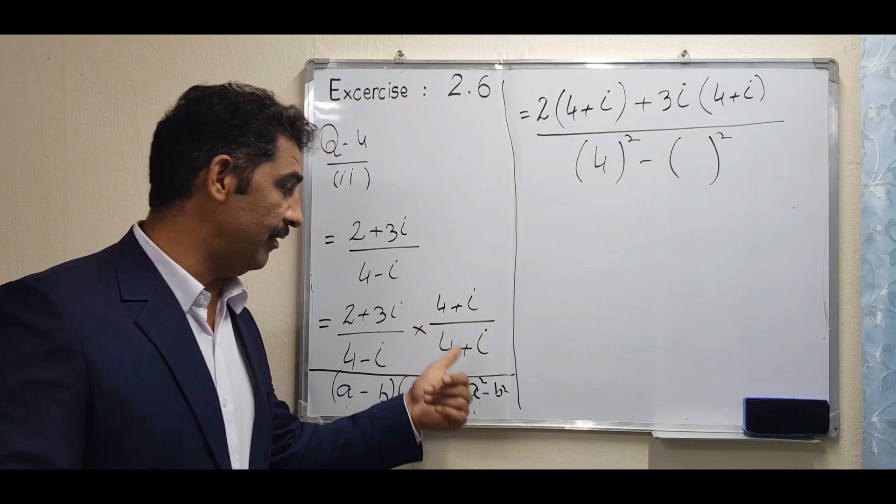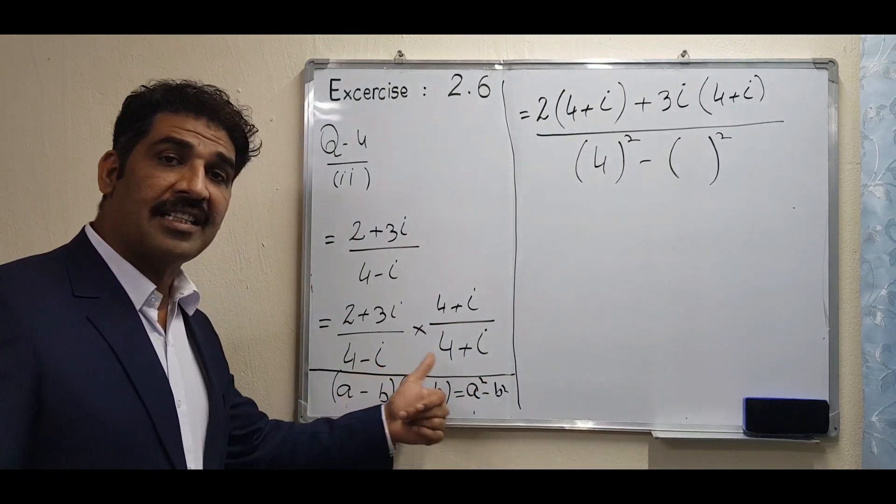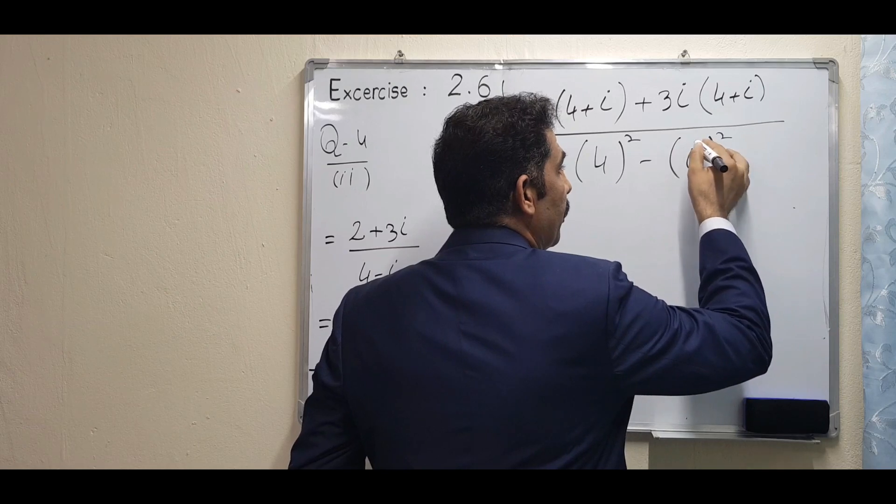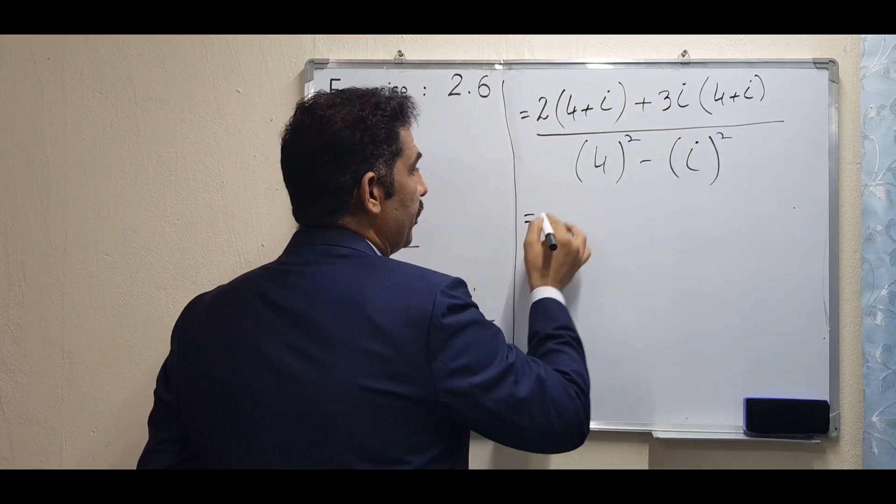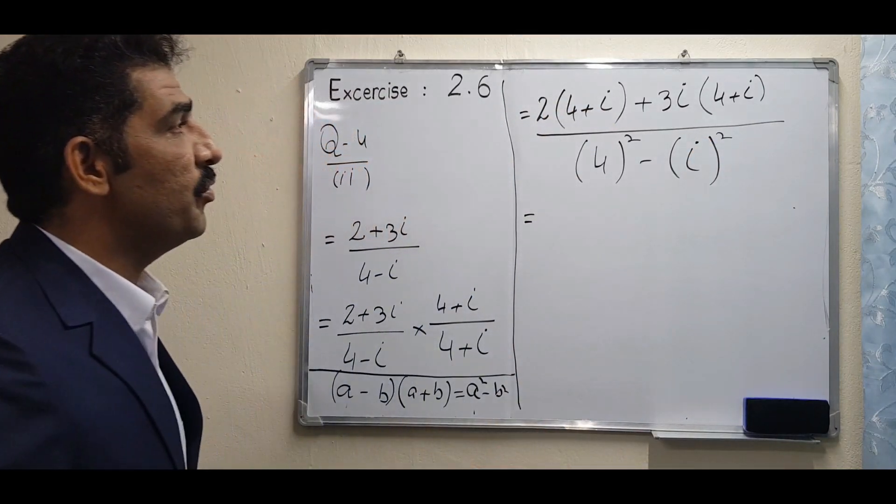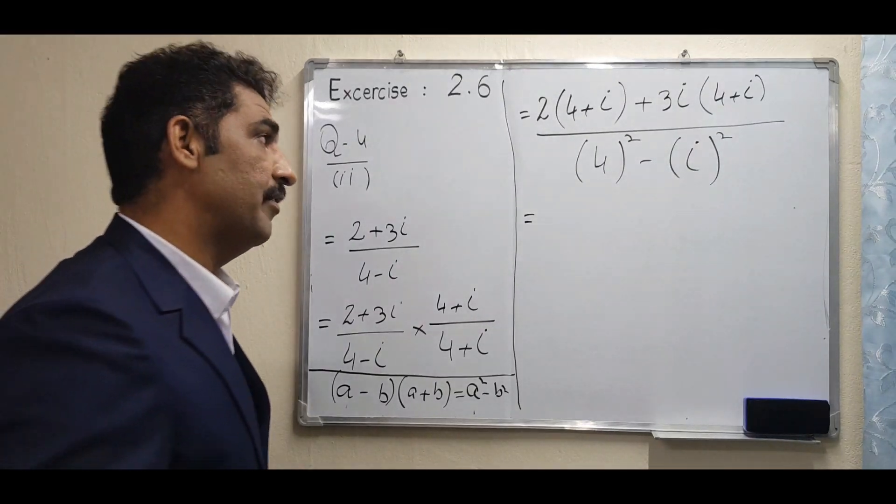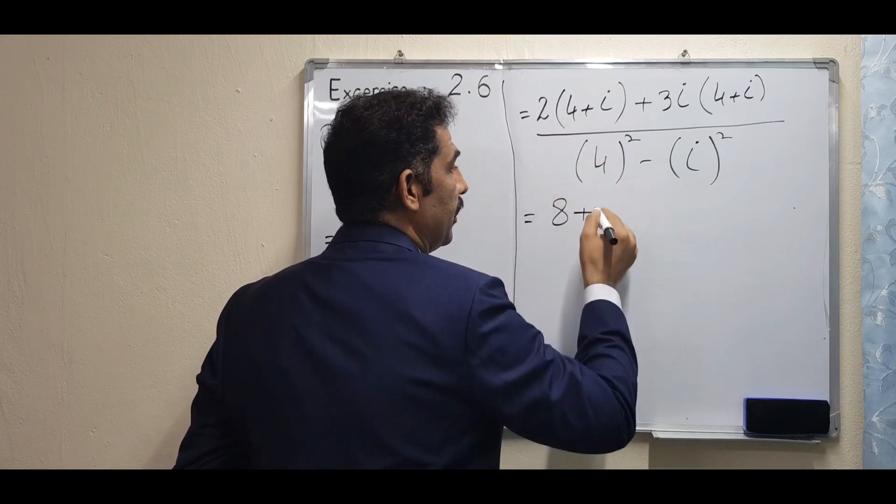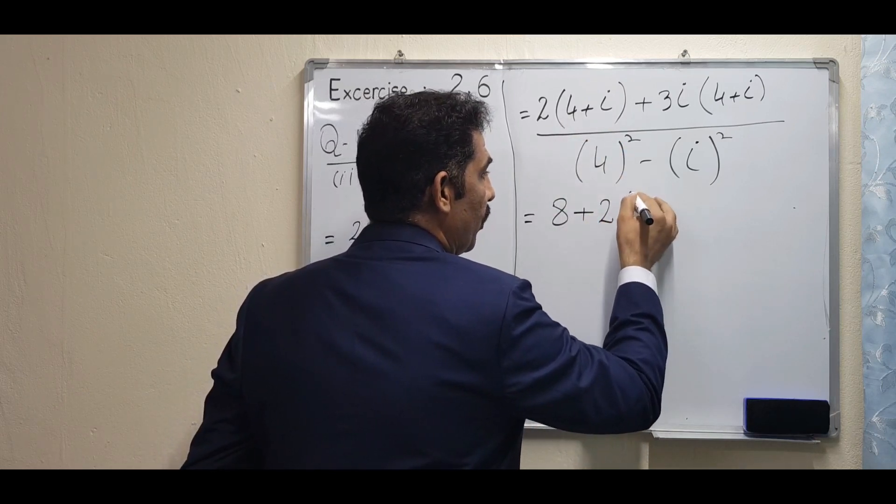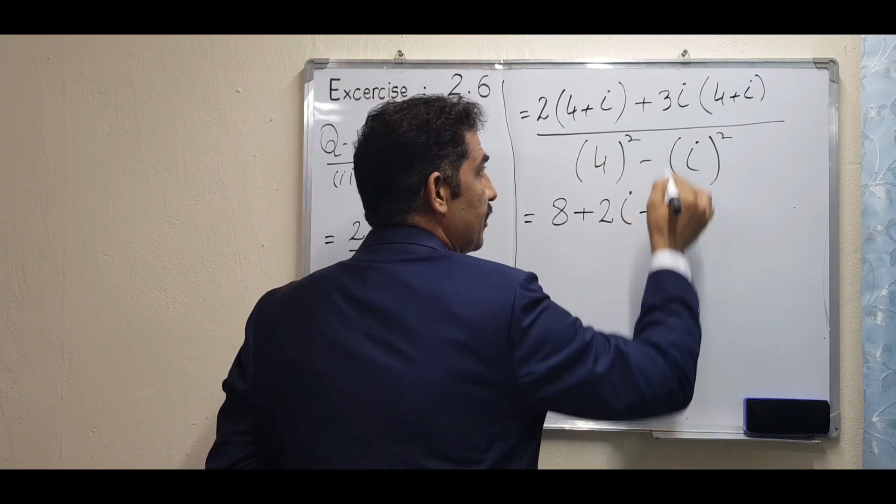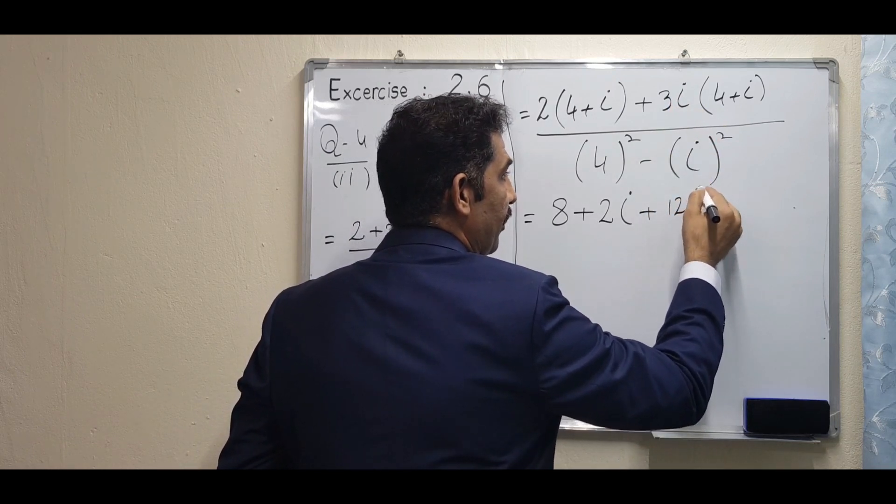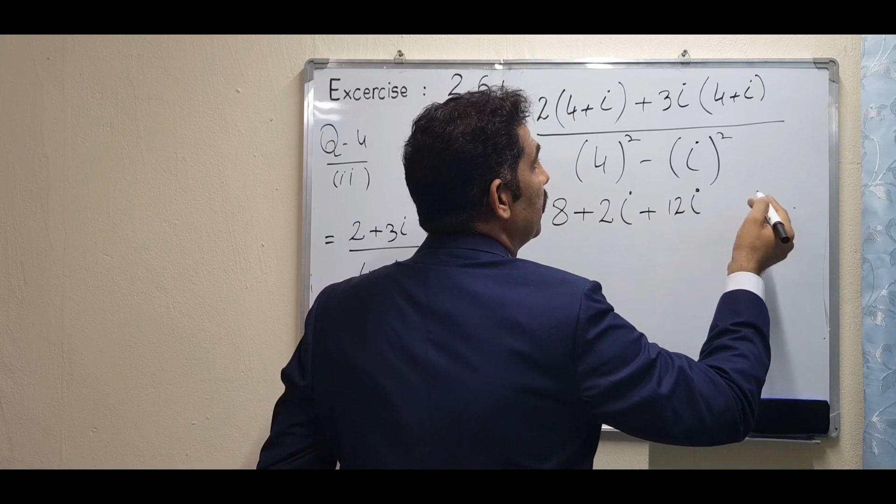Okay, so you write only iota. Good. Now the numerator we have to simplify by multiplying as we did before. Two fours are eight, and two iota. Plus three into four: twelve iota. Now you are becoming active students.